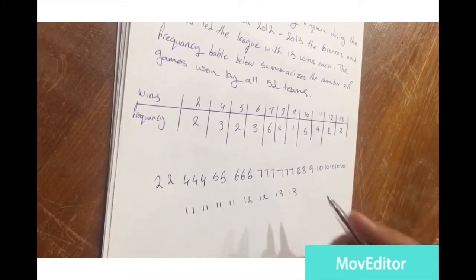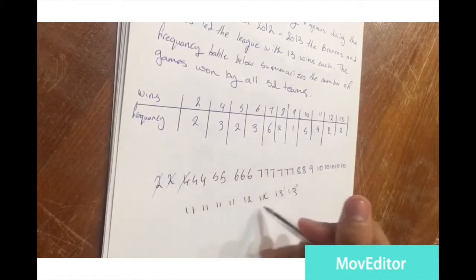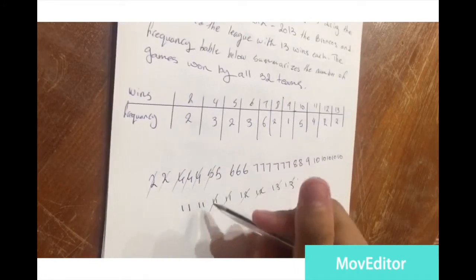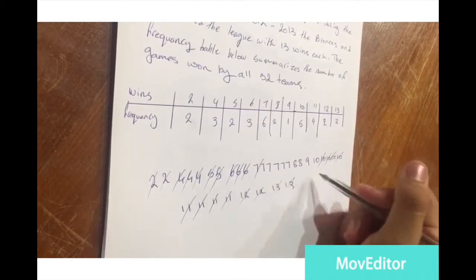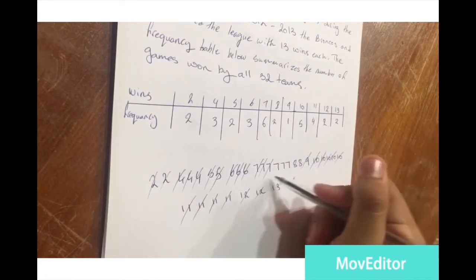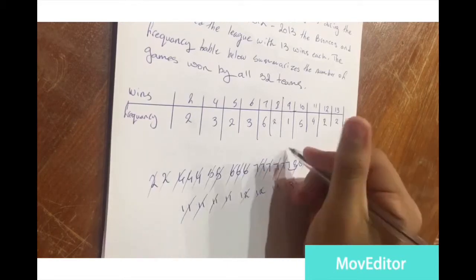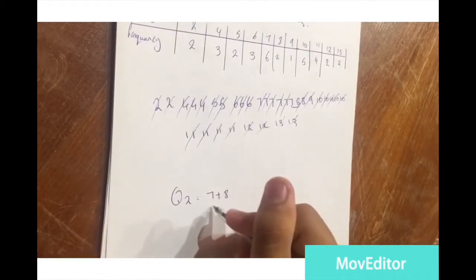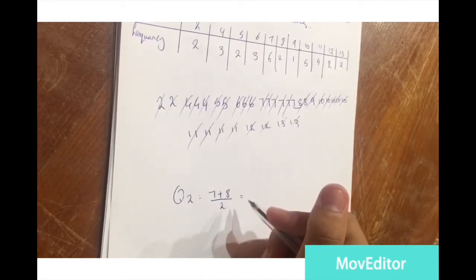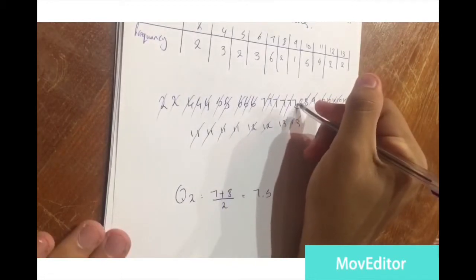Next, we find Q2. The easiest way is to cross off numbers from both ends to find the middle. After crossing off, we are left with two middle numbers: seven and eight. Since we have two numbers, we add them and divide by two: Q2 = (7 + 8) / 2 = 7.5. So Q2 is 7.5.